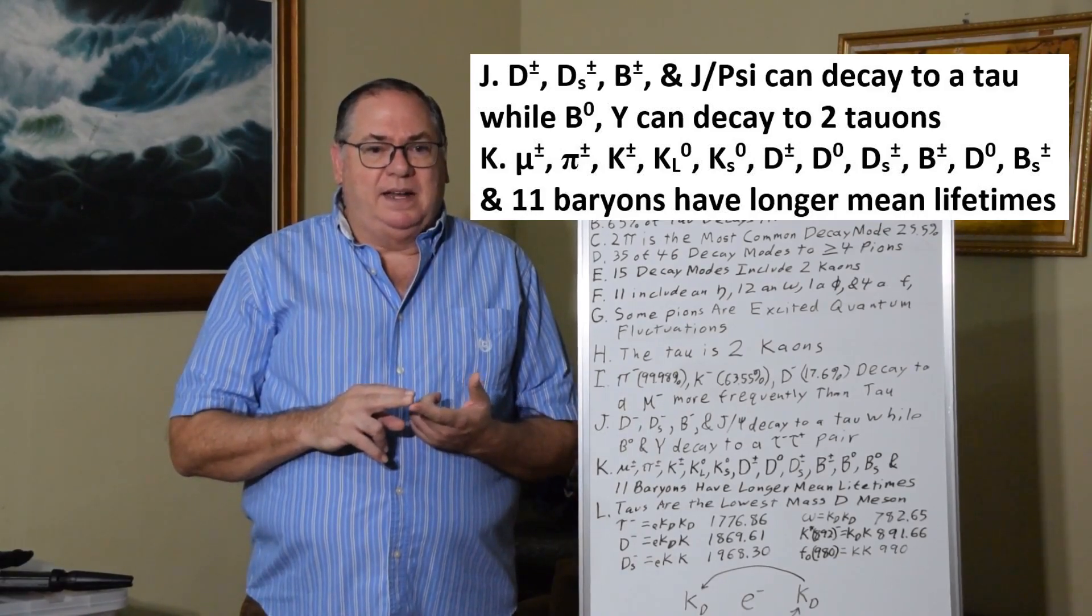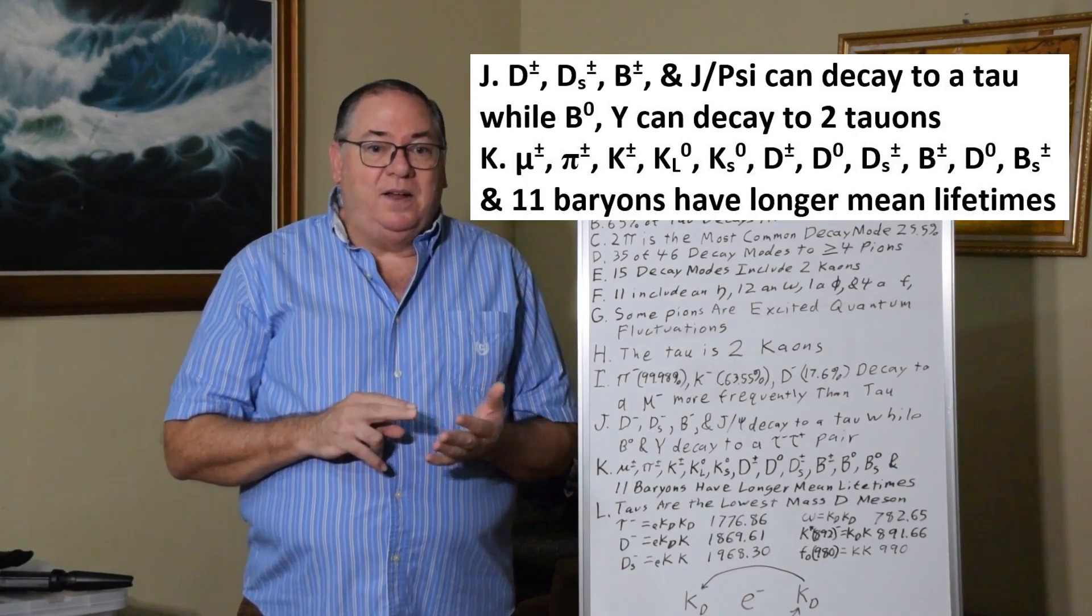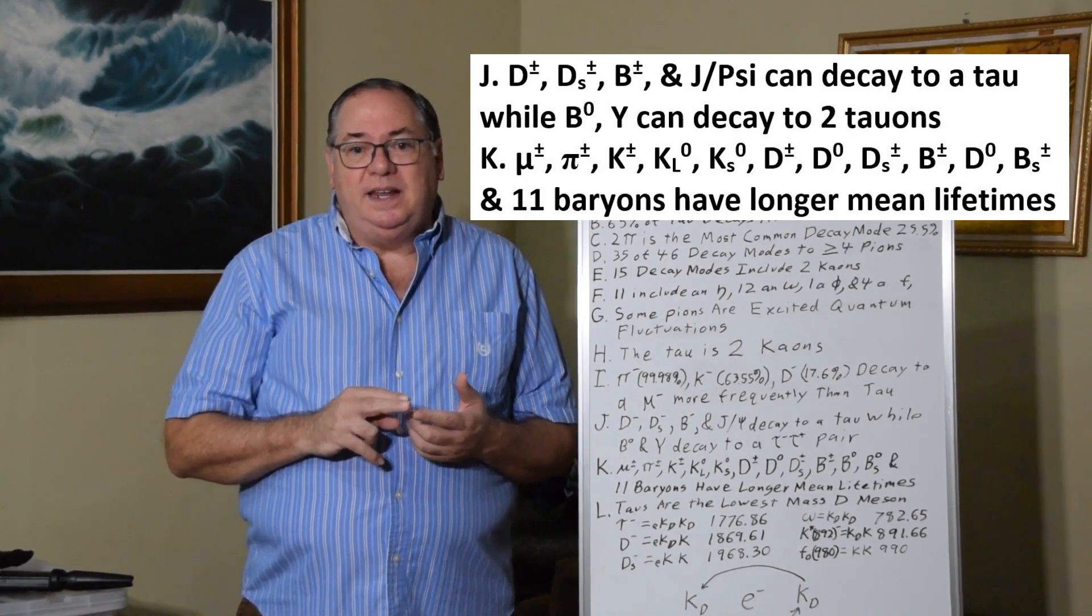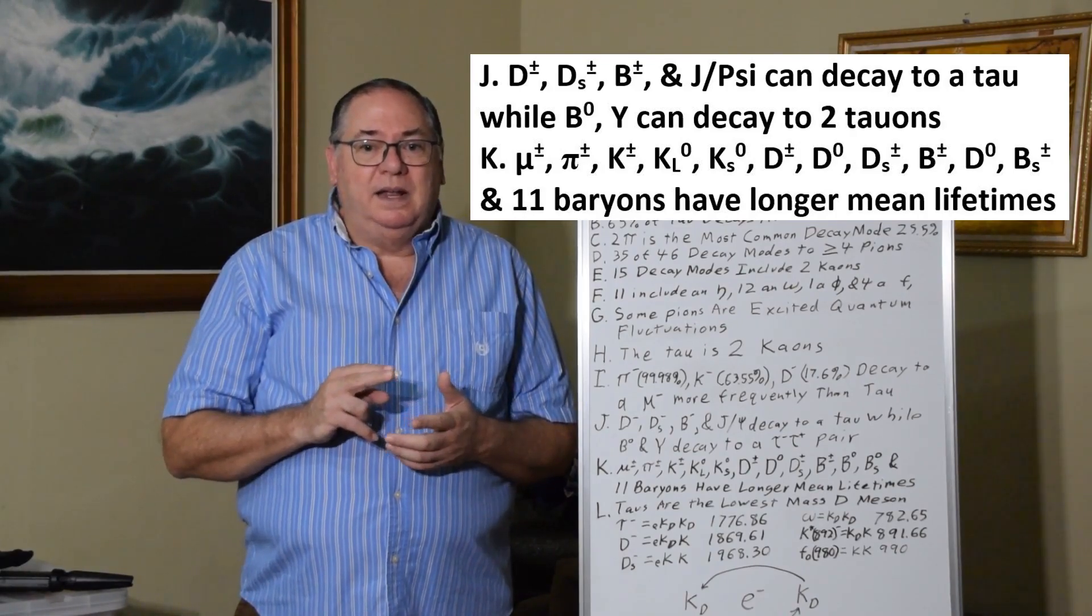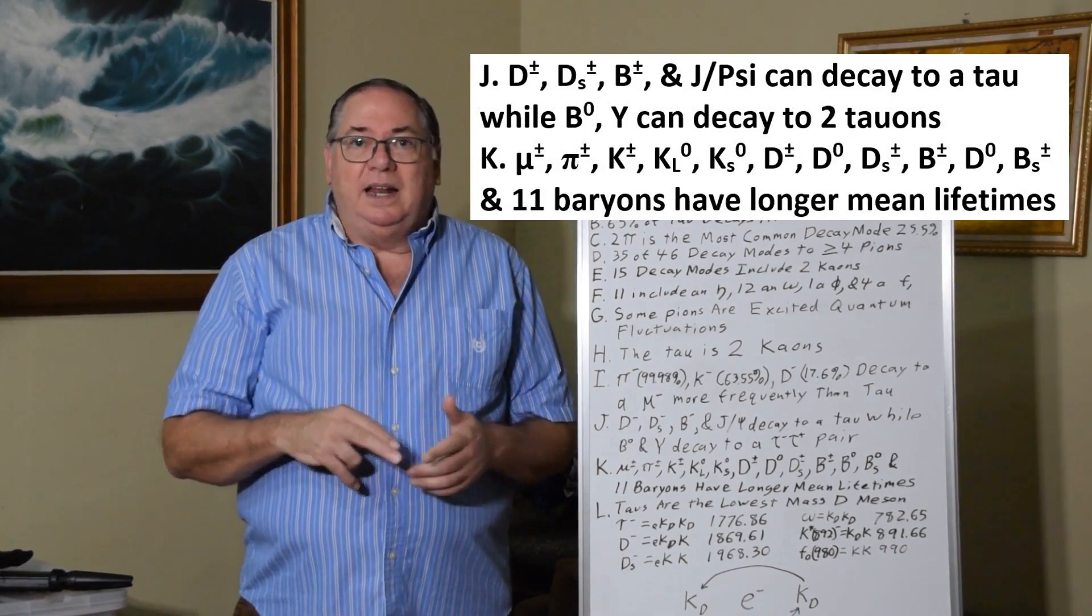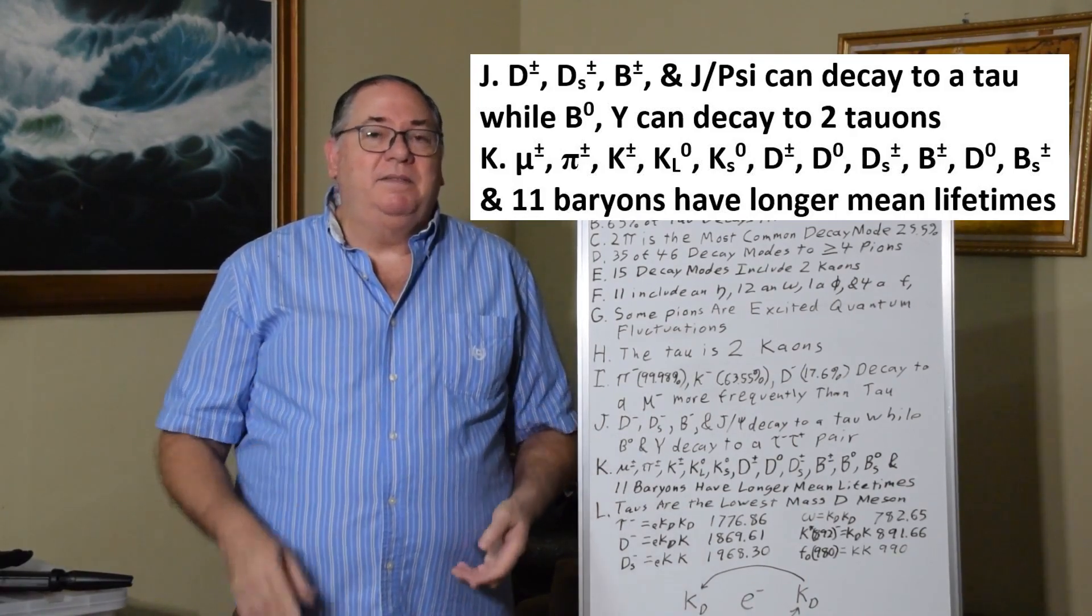A whole host of particles live longer than the tau. On the list I've got the mu, the pi, the k, the k long, the k short, the d, the d naught, the d strange, the b, the b naught, b strange, and 11 baryons, all have longer mean lifetimes than the tau.